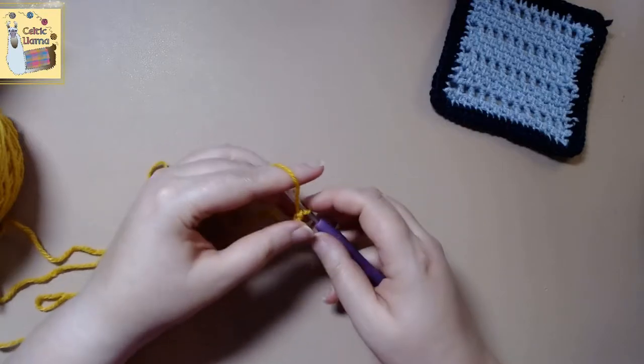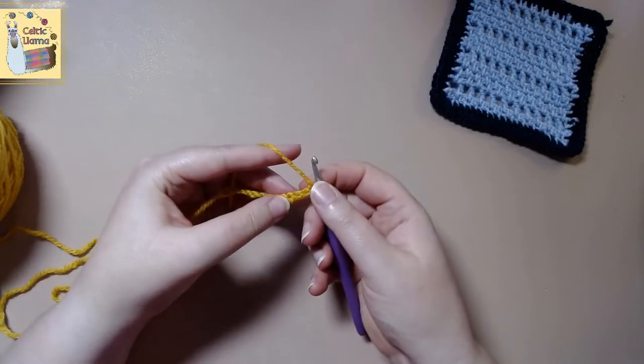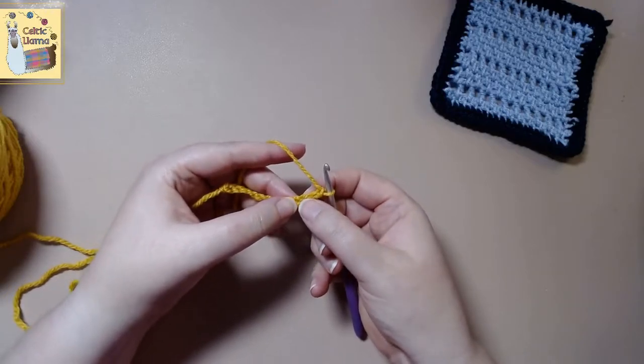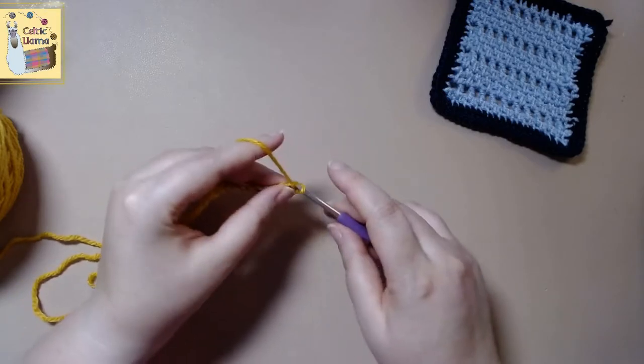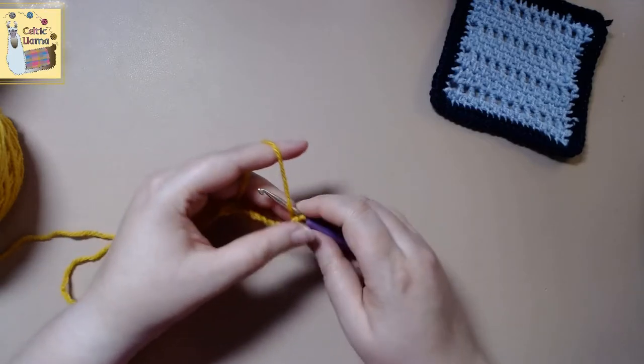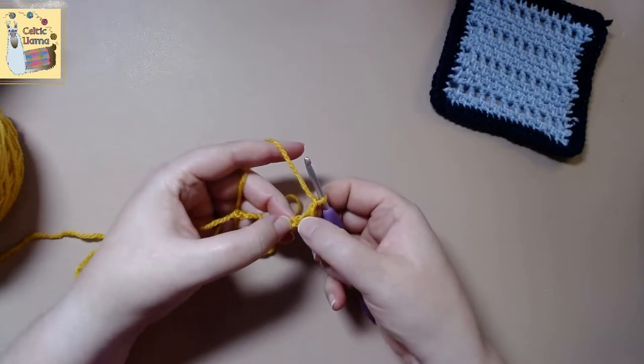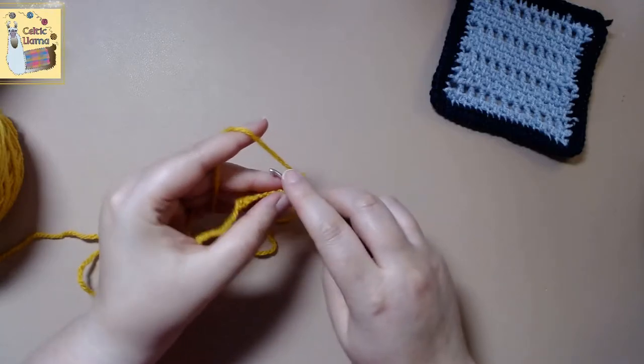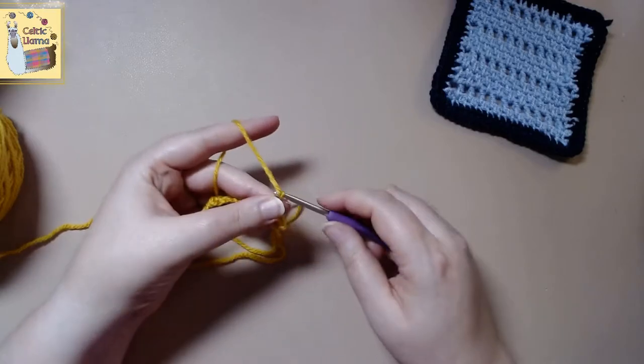So now you want to chain three and in the fourth chain from the hook you're going to want to do a single crochet. And then chain one. And skip the next stitch. So we'll skip that one and we'll go into the next one. We'll single crochet. And chain one. And we will repeat this all the way to the end of the row.